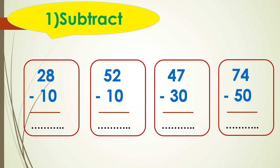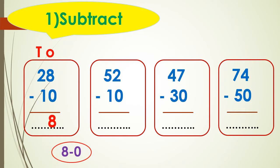For example, subtract 28 minus 10. First I write ones and tens. We will start subtracting by ones: 8 minus 0 equals 8. So I write 8 in the ones place. And in the tens: 2 minus 1 equals 1. So I write 1 in the tens place.